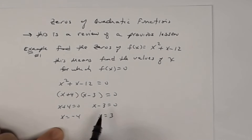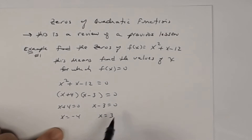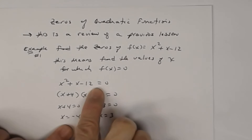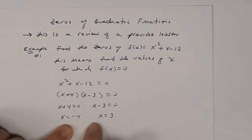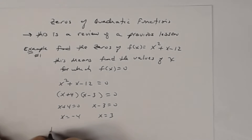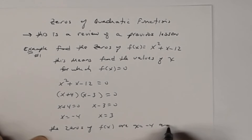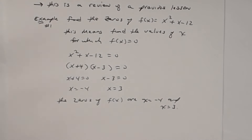Those are your solutions to this equation, which means those are zeros of this quadratic function. So the zeros of f of x are x equal negative four and x equal three. That's what we mean by zeros.